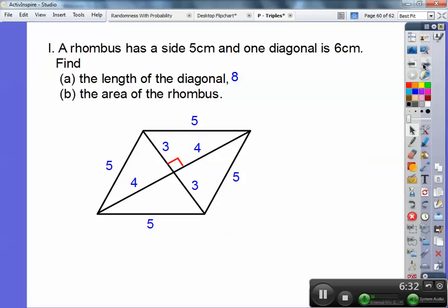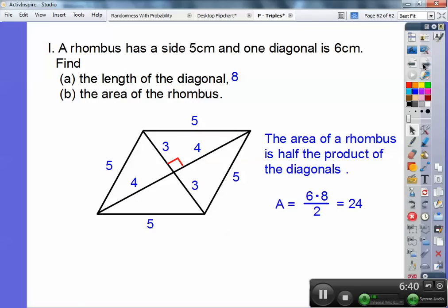Now the second part's easy if you know the formula. The area of a rhombus is half the product of the diagonals. So I know one diagonal is 6. I know the other diagonal is 8. So half of 6 times 8 and I get 24. And again, it's area. So it would be square units. In this case, it would be 24 centimeters squared.